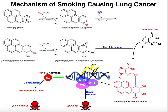So benzopyrene, when it ends up in an area of drug detoxification such as the nasal mucosa or the liver, or when it gets into the blood, ultimately what's going to happen is one of these P450 enzymes — such as CYP1A1 or CYP1B1 — is going to perform an epoxidation reaction. It's actually known where this occurs: it occurs on this carbon-carbon double bond right here, and what we get is an epoxide formation.